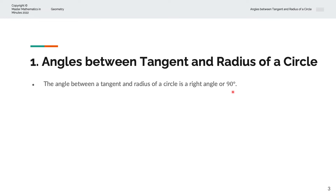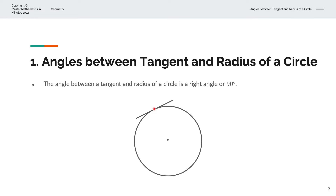Let's consider this visually. We have a circle and we have labelled the centre of the circle. By plotting a tangent line that touches the circumference of the circle, we can connect the tangent line and the centre of the circle with a radius. And that angle is a right angle, or 90 degrees.